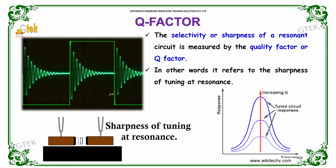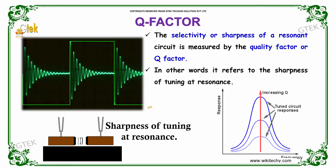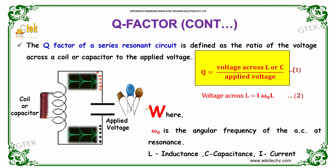The selectivity or sharpness of a resonance circuit is measured by the quality factor, or Q-factor. In other words, it refers to the sharpness of tuning resonances. The Q-factor of a series resonant circuit is defined as the ratio of the voltage across a coil or a capacitor to the applied voltage.